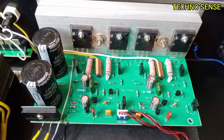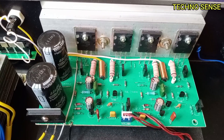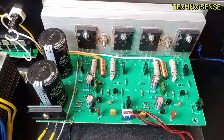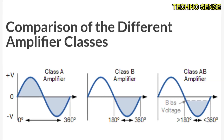Through this discussion, it is clear that the Class AB amplifier is a combination of the Class A and Class B amplifiers. The Class AB amplifier always performs much better than both Class A and Class B amplifiers.